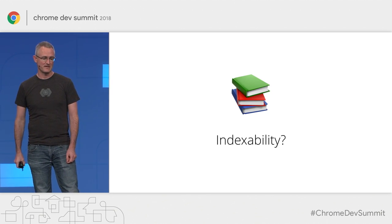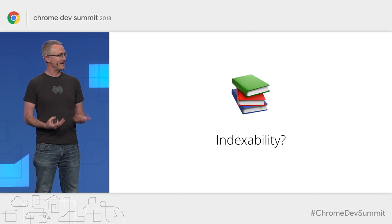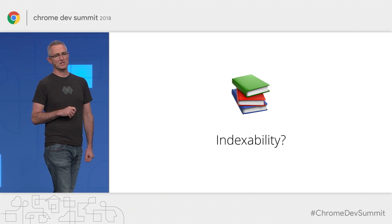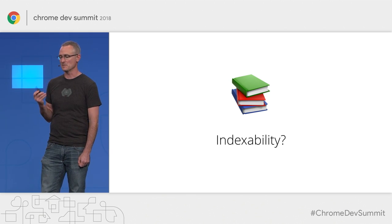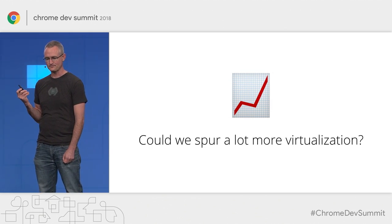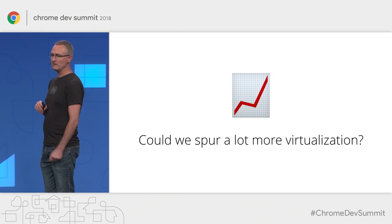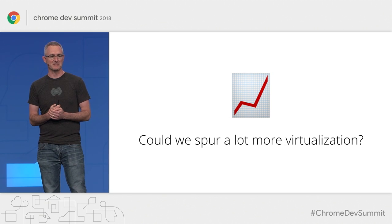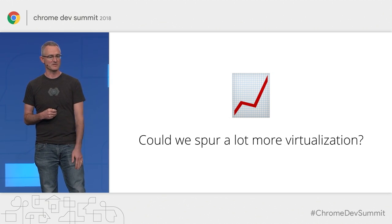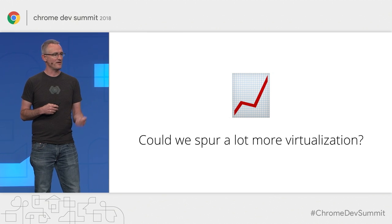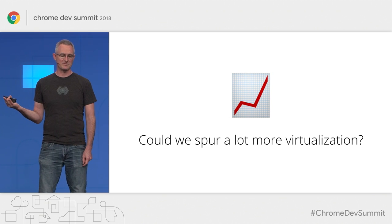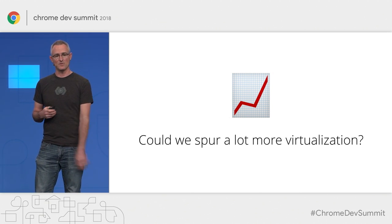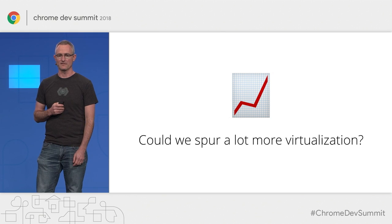Then there's search friendliness. Since virtualized content is added on the fly, it's not generally visible to search engine crawlers. We'd love to get the performance benefits of virtual scrolling without sacrificing indexability. Finally, and maybe most importantly, we'd like to greatly increase the amount of virtualization that happens on the web by adding platform-level support. While you can do it today, virtual scrolling is basically a fringe feature. We'd like to put it front and center, the way it is in mobile SDKs, making it easier to discover and easier to use.